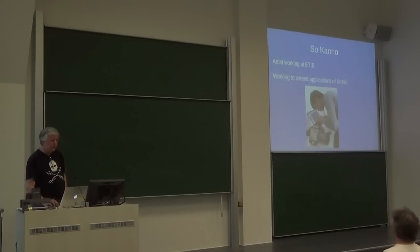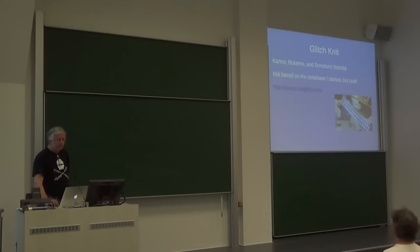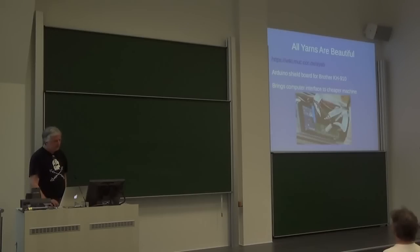But what he did do was he extended the knowledge of the data format to extend to the 940 and other knitting machines, and he contributed all that back to the open source project. He didn't keep any of that internal, which is great. So Kano, he's at ETIB. He's now working on extending applications of Knitik. He's here working on a motor interface to do the automated carriage. There's Glitch Knit in Japan, which is trying to modify the actual memory in the knitting machine. There's an Arduino shield board for the KH910. Now, this is really important because these machines have gotten very expensive as these projects have proliferated.